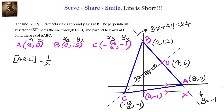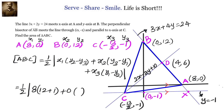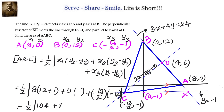Substituting the values: x1 is 8, y2 minus y3 is 12 minus (minus 1) equals 13. x2 is 0, so that term vanishes. x3 is minus 13 by 2, and y1 minus y2 is 0 minus 12 equals minus 12, so minus into minus gives plus. Simplifying: 8 times 13 is 104, and 13 by 2 times 12 is 78. 104 plus 78 is 182. 182 divided by 2 is 91 square units. So the area of triangle ABC is 91 square units.